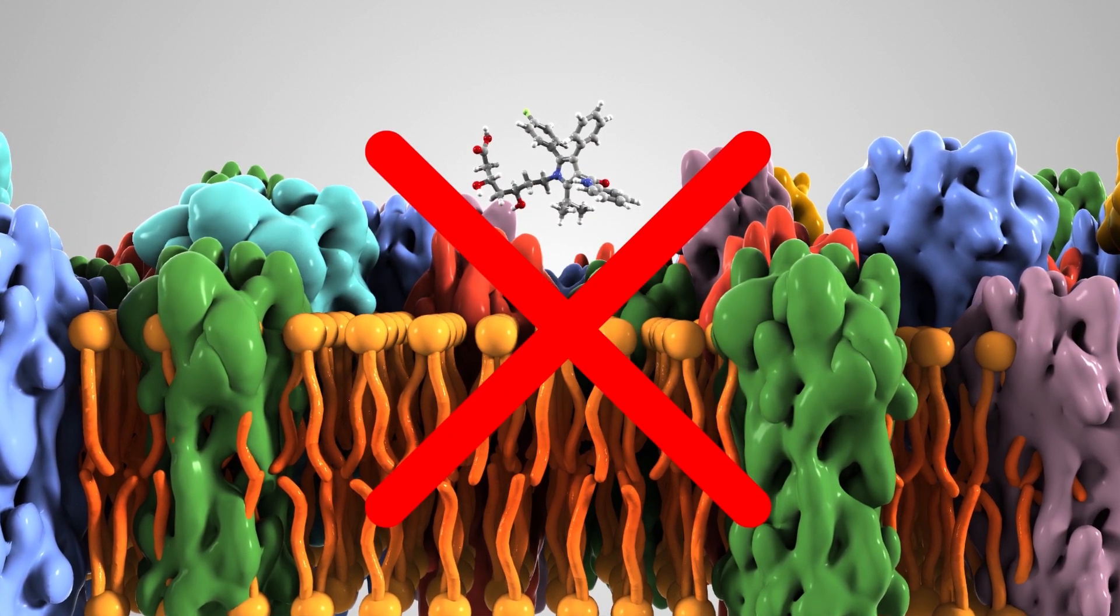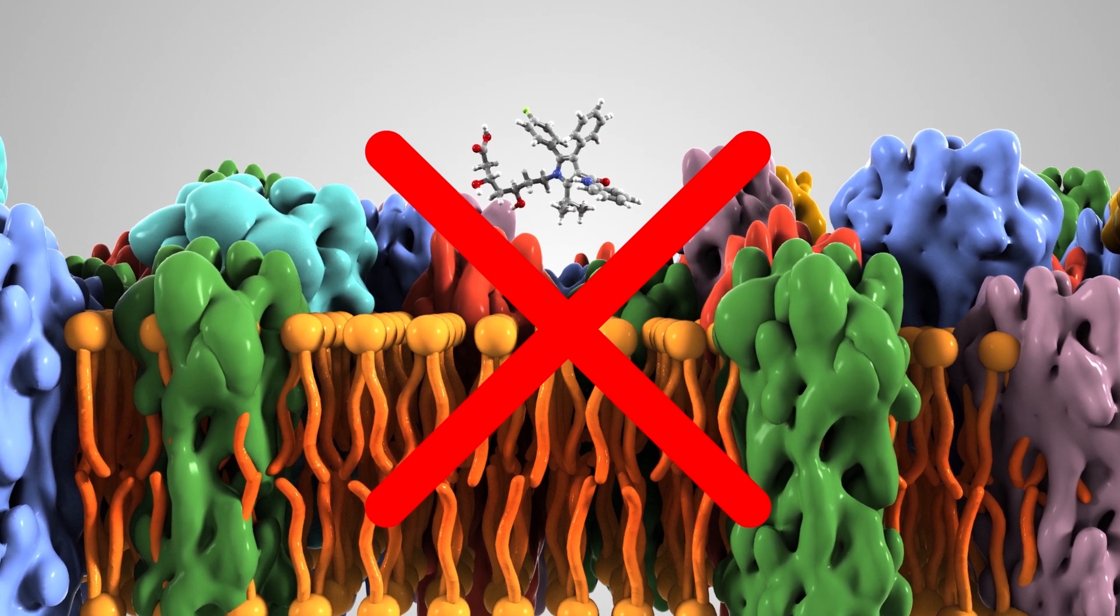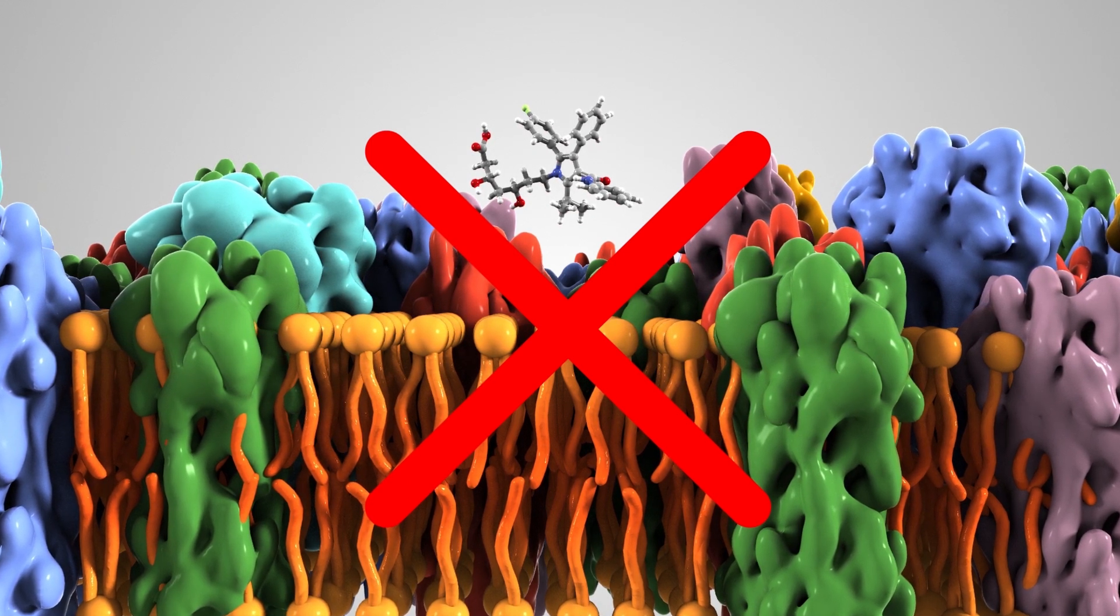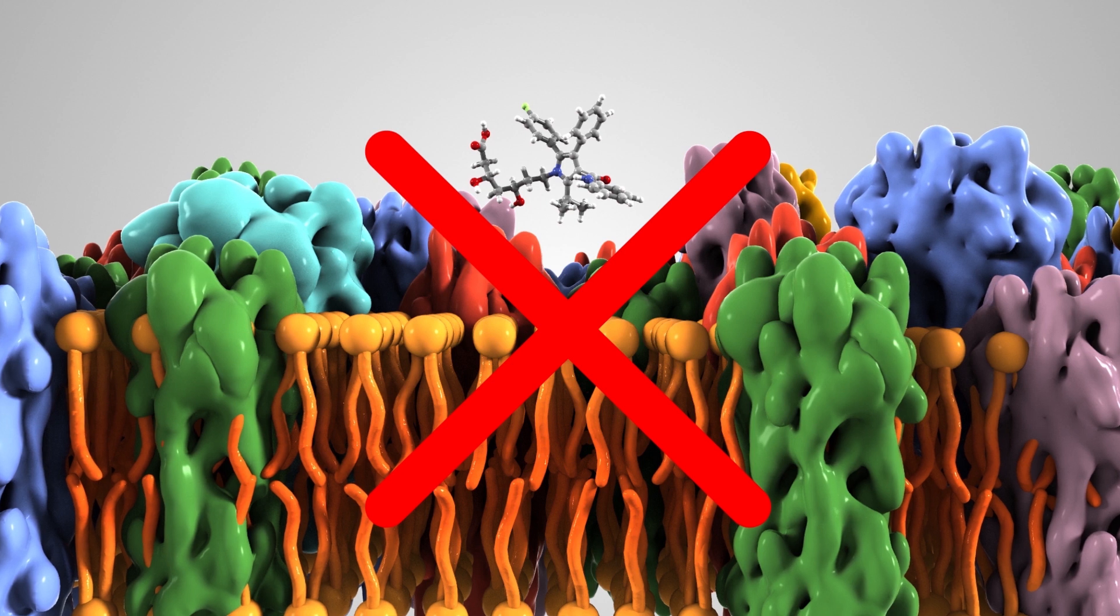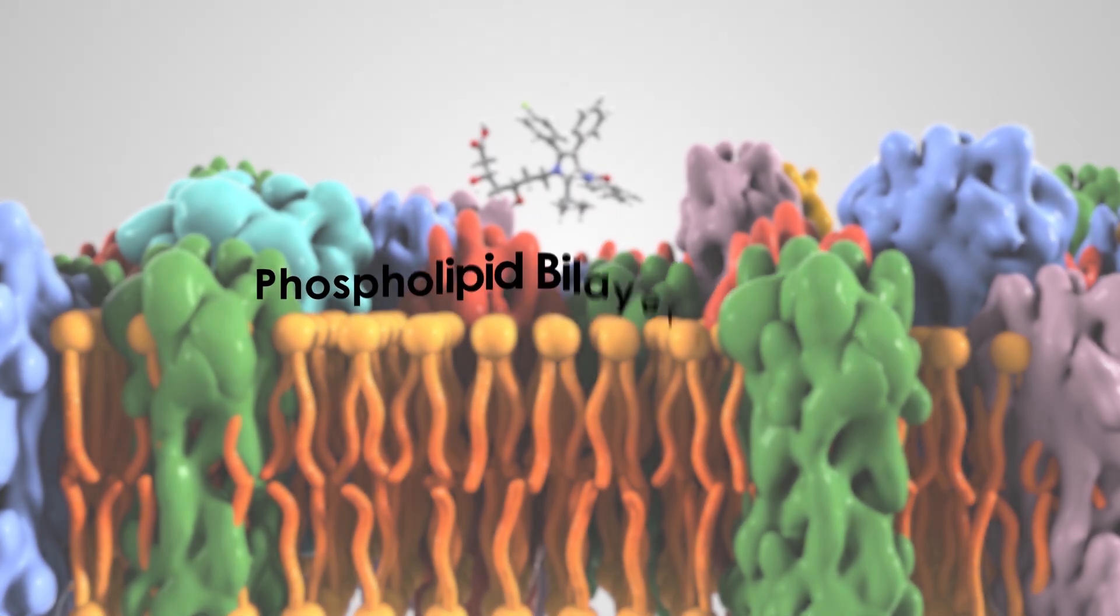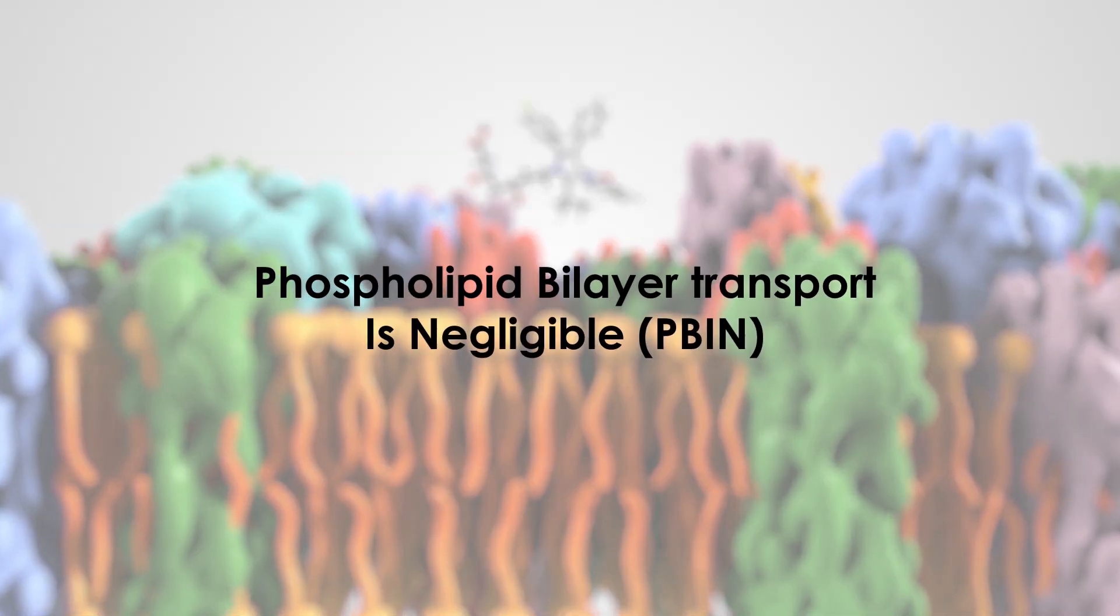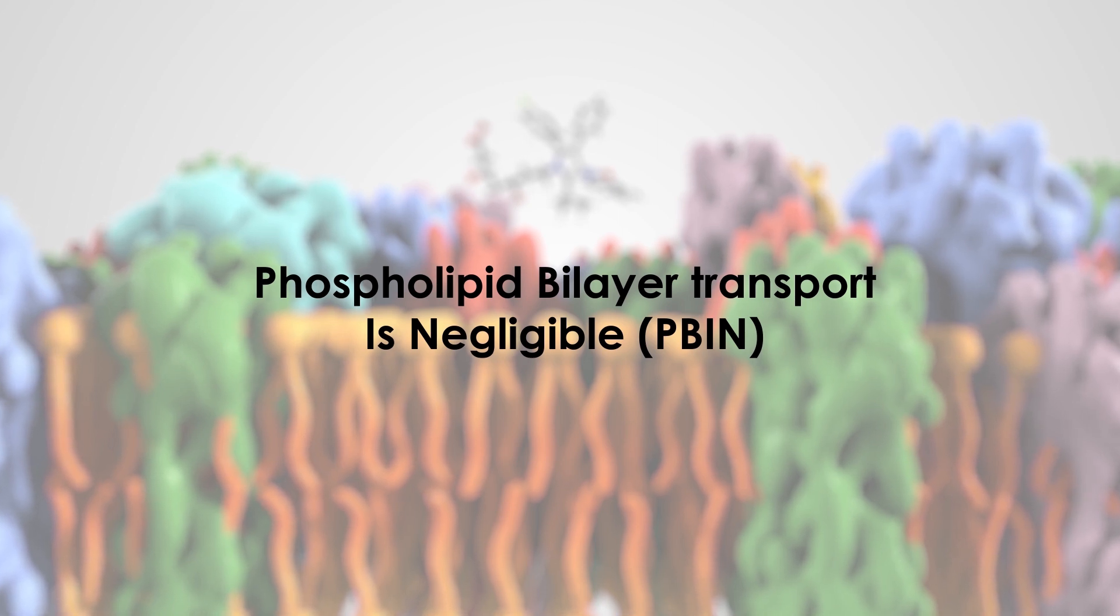Until now, oily drugs were thought to pass easily through the bilayer. This only happens in pure bilayer membranes. However, according to Professor Kell and his colleagues, phospholipid bilayer transport in real cells is negligible. Not even water molecules pass in this way.